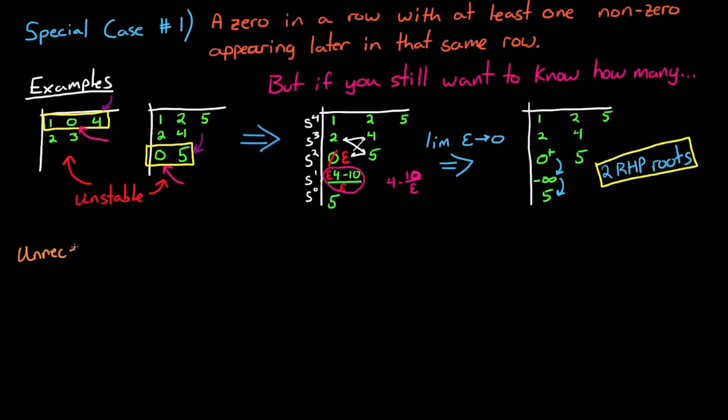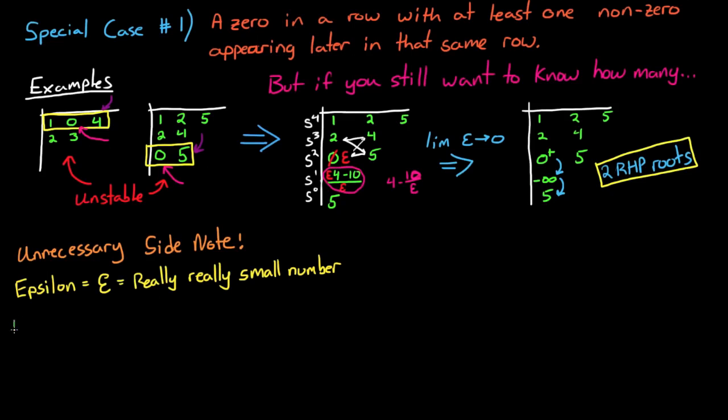Now if you don't mind, let me just quickly go into an unnecessary side note on why we use the Greek letter epsilon. In several branches of mathematics and computing, epsilon is used to represent an arbitrarily small number. So if you think of the smallest number you can, epsilon is even smaller. However, it is still greater than nothing.